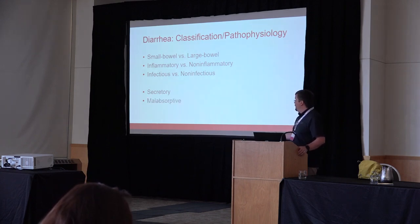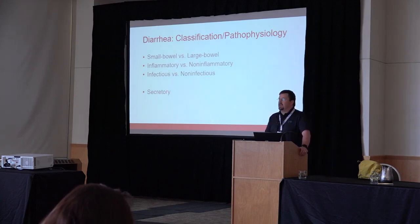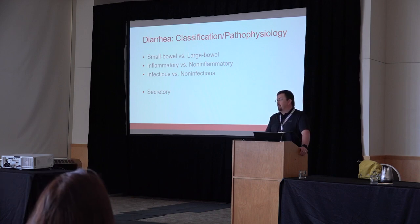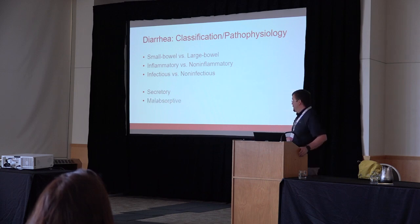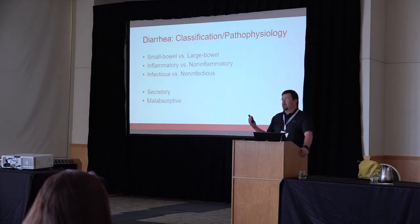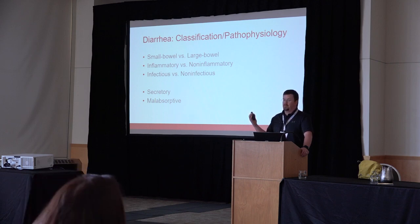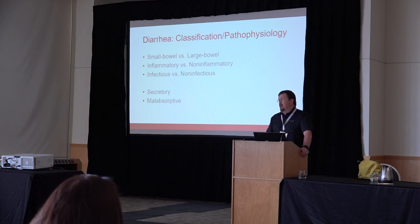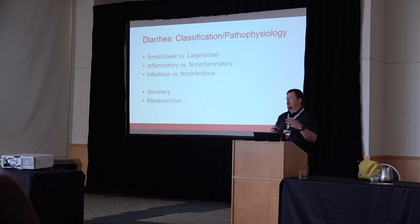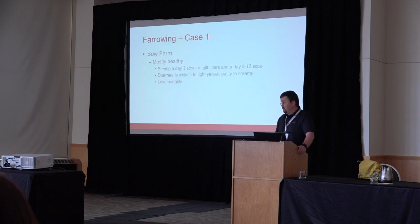One of the more common mechanisms is secretory diarrhea — something like an enterotoxin stimulating excessive release of fluid. Classic examples would be E. coli, and rotavirus non-structural protein 4 can also act as an enterotoxin causing fluid secretion. The other broad classification is malabsorptive diarrhea, which can involve reduction of absorptive surface area, villus blunting or atrophy, impaired bile salts causing excess fats in the intestine, or osmotic diarrhea in the colon when larger solutes pass through.